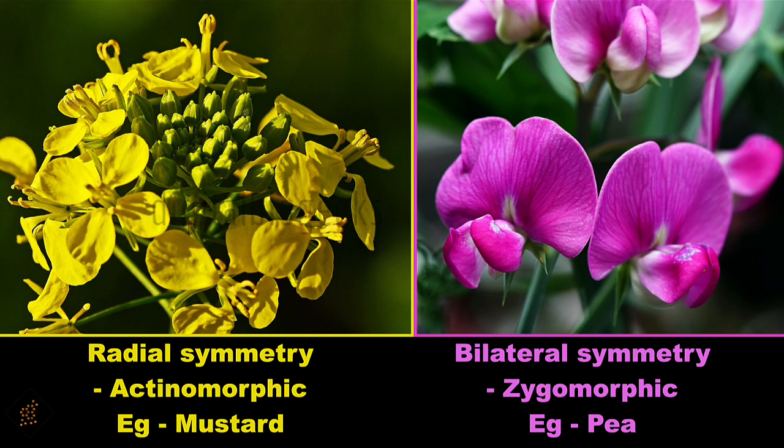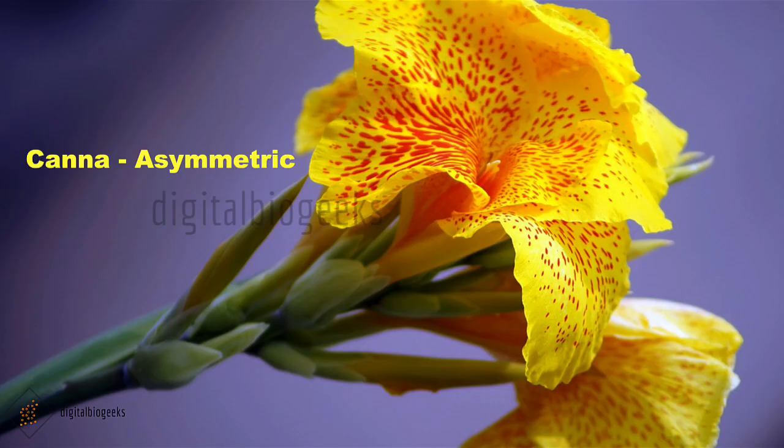Flowers also have symmetry. Radially symmetrical flowers are called actinomorphic — a flower can be divided into equal halves by any plane passing through its center; for example, mustard, datura, and chili. Bilaterally symmetrical flowers are known as zygomorphic — these can be divided into two equal halves by only one plane; for example, pea, gulmohar, and bean. Some flowers like canna have no symmetry at all and cannot be divided into equal halves by any plane — they are asymmetrical.